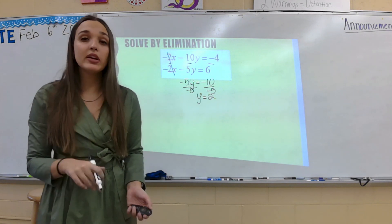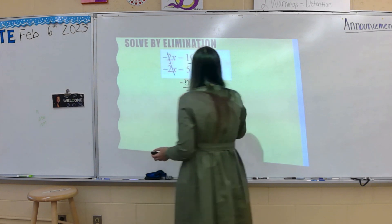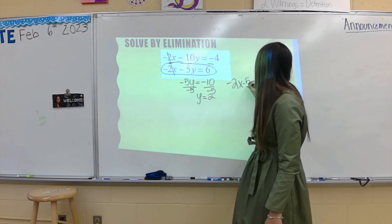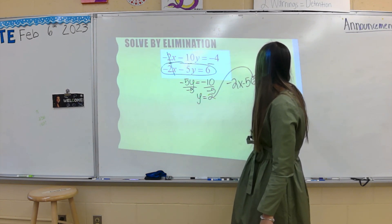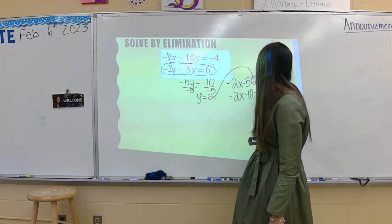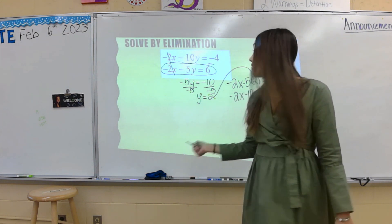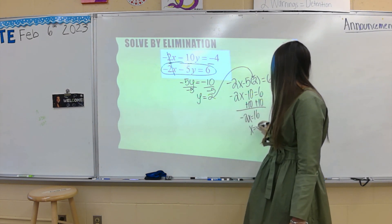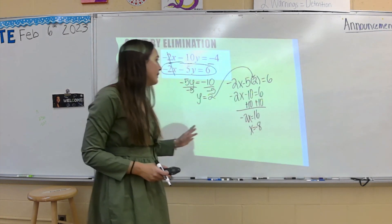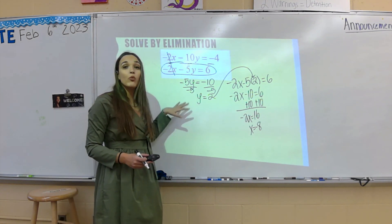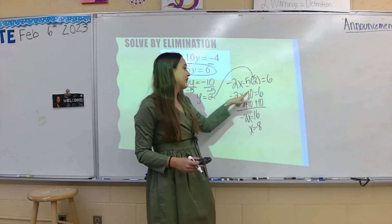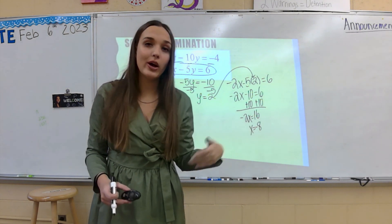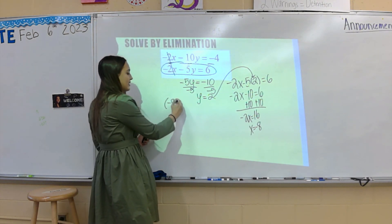Now I have one variable: y equals 2. Let's plug it into one of the original equations to solve for the other. I'm going to plug it into the second one — if you choose the first one, you'd still get the same answer. So I get negative 2x minus 5 times 2, which gives me negative 2x minus 10 equals 6. I'm going to add 10 to both sides and get negative 2x equals 16, so x equals negative 8. We're not done though — I can't just say my x is this and my y is this; I want it written as a point. So my final answer is negative 8 comma 2.